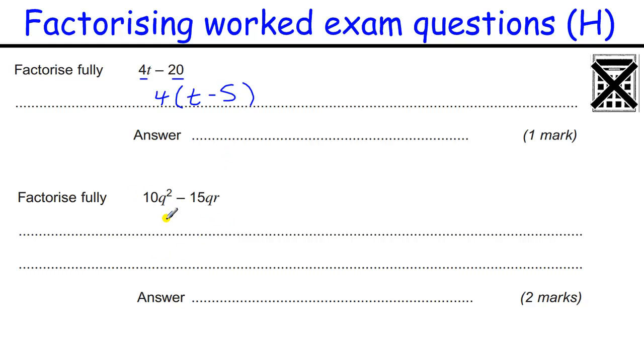Factorize fully. So we've got what goes into 10 and 15. That's 5. What goes into q squared and q? That's q. What are times this by to get this? Well, 2 times 5 is 10. And q times q is q squared. 5 times 3 is 15. And q times r is qr.